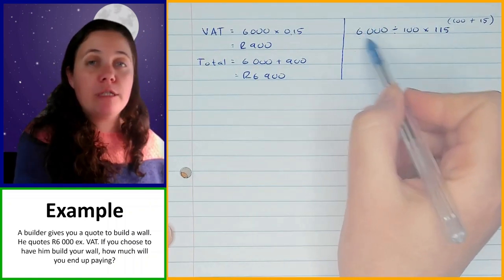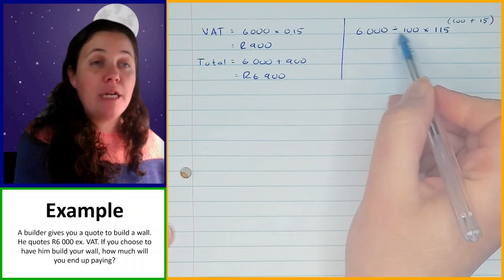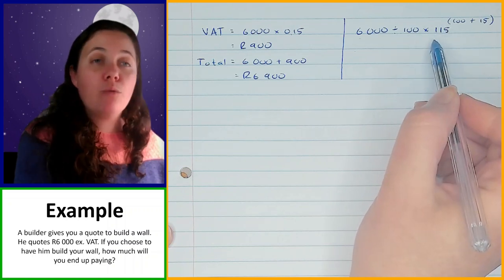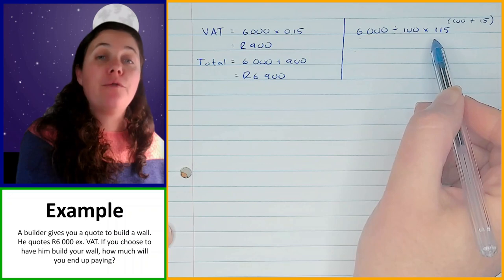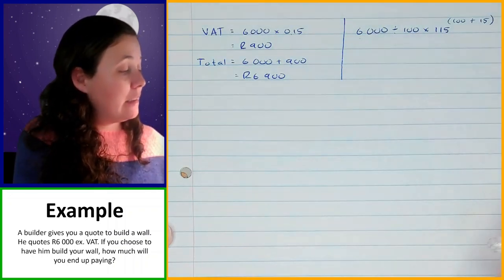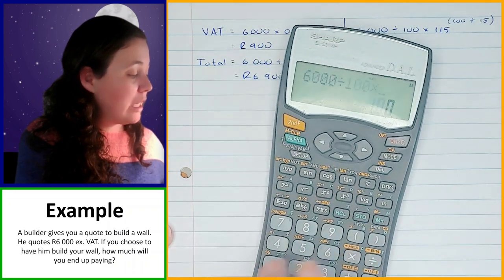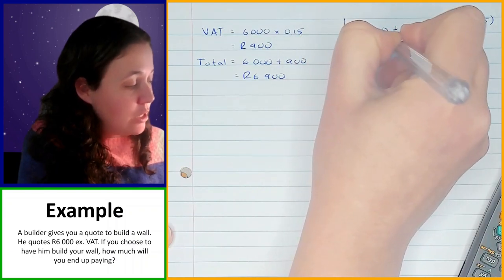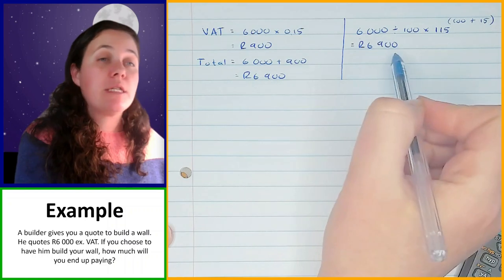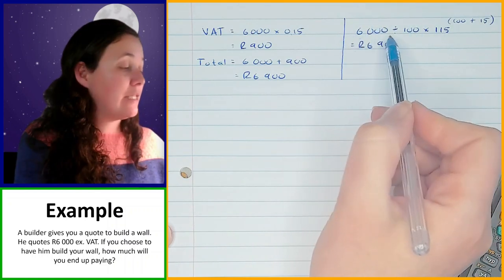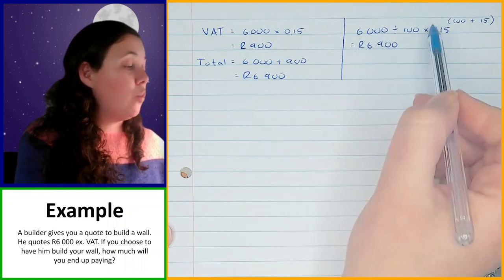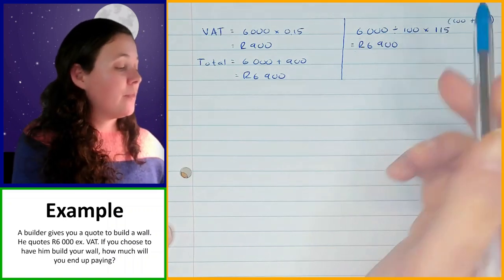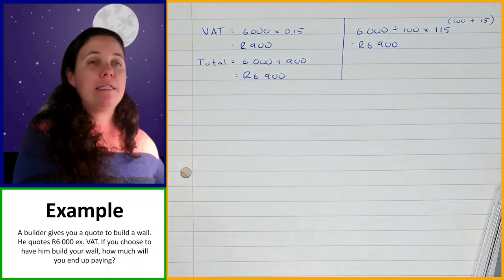So I take the amount I know, which is 6,000, divide by the percentage it represents, which is 100%, and multiply by what I want, which is the amount inclusive of VAT — that's 115%. Using my calculator: 6,000 divided by 100 times 115, and that gives me 6,900. I can get that answer straight away by knowing the price ex VAT is 100% at 6,000, and I want 115%, which is the price inclusive of VAT, giving me 6,900.